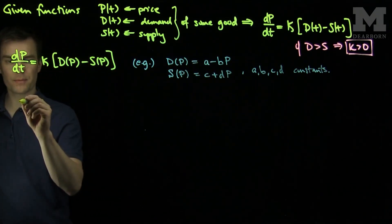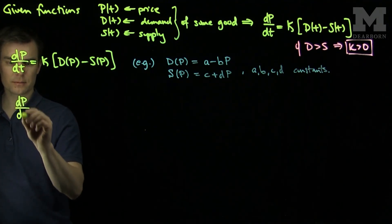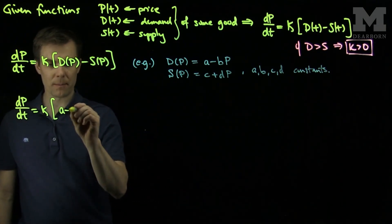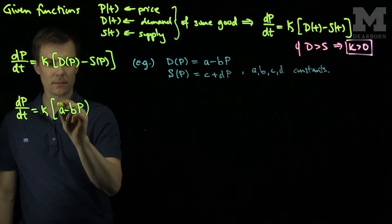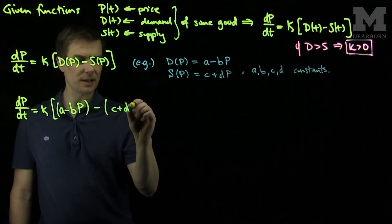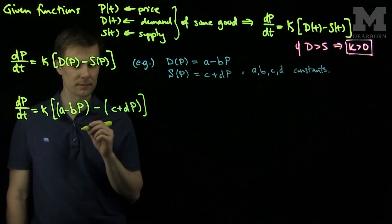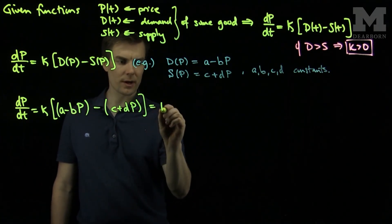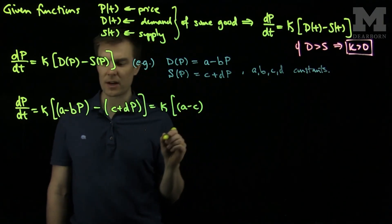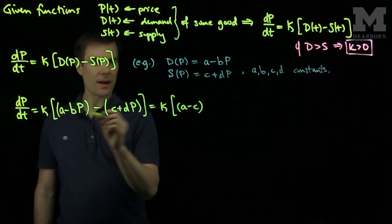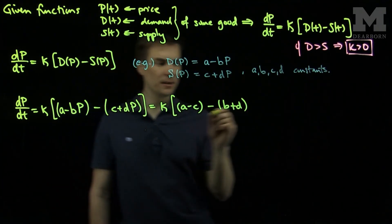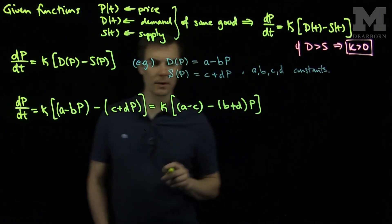Now, if we plug this into our formula, we see dP/dt is K, and then I will plug in a minus bp, and then minus c plus dp. And if we gather the correct terms, we'll have a K, and then I'll have an a minus c, that's the term without any p's, and then I will have a minus b plus d times p.